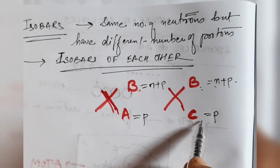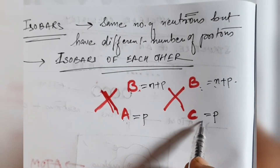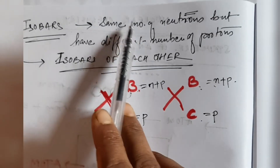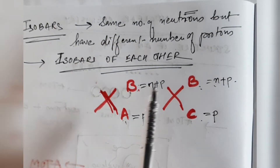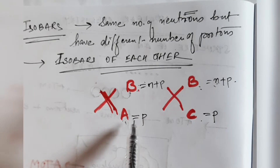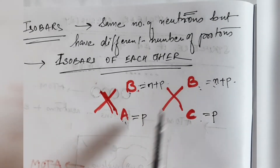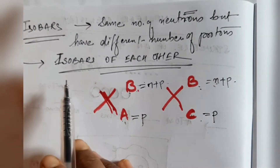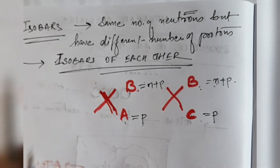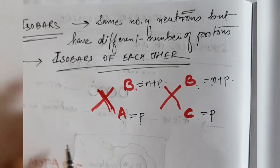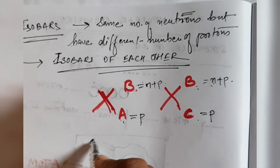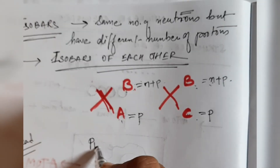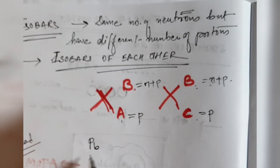So when the mass number is the same — meaning the total number of protons plus neutrons is the same — but the number of protons is different, we say these elements are isobars of each other. Let's take the example of lead.